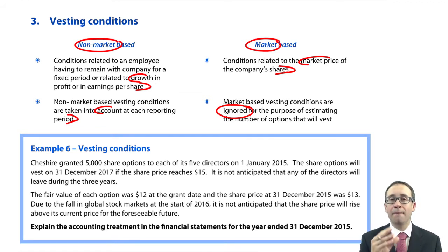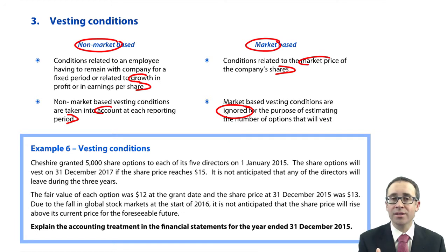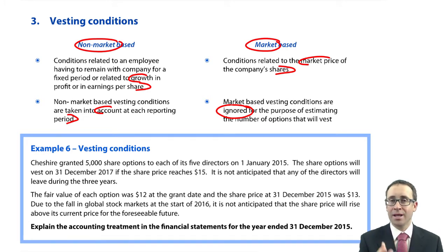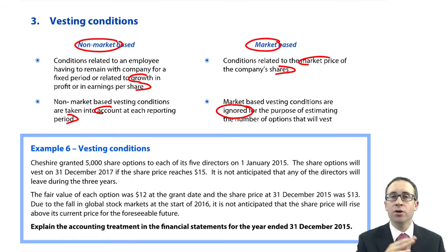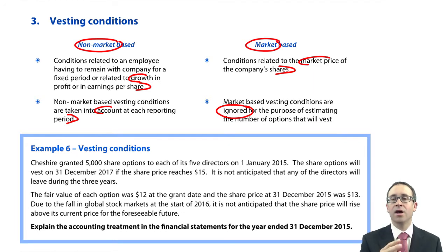The reason we ignore market-based vesting conditions is because they are actually factored into the fair value of the share-based payments — so they have already been accounted for. If there is a high likelihood of meeting the target, that gives rise to a higher fair value; if the likelihood is slim, the fair value will be much less. You don't need to worry about the theory — all you need to identify is that if there is a market-based vesting condition, we ignore that condition until the options actually vest.